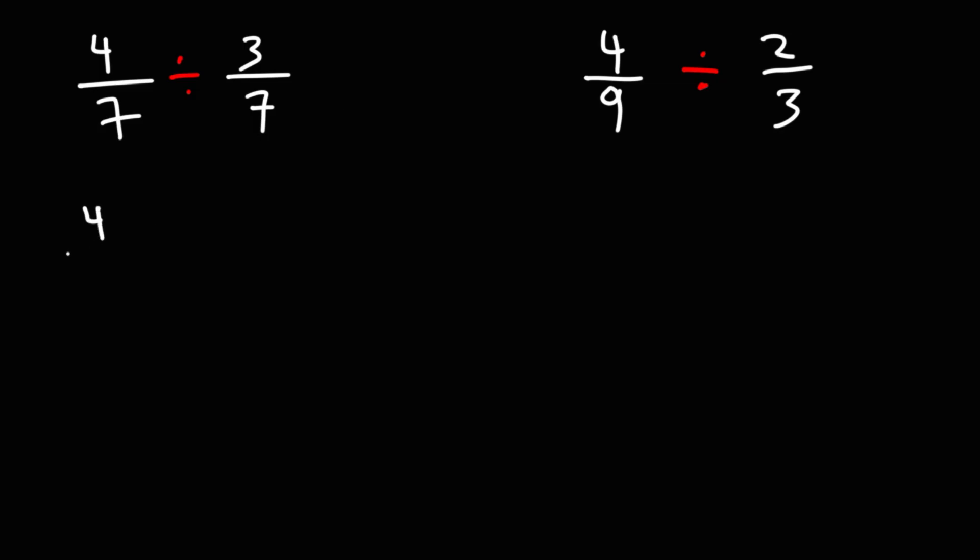We're going to keep the first fraction the same, we're going to change division to multiplication, and we're going to flip the second fraction. Notice that we could cancel a 7. So we're left with 4 over 3. So that's the answer for the first example.